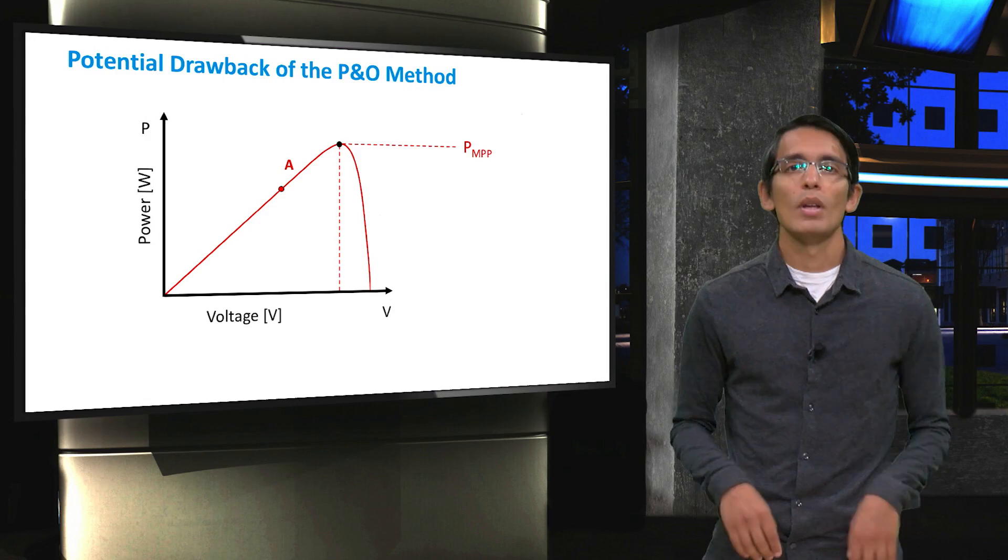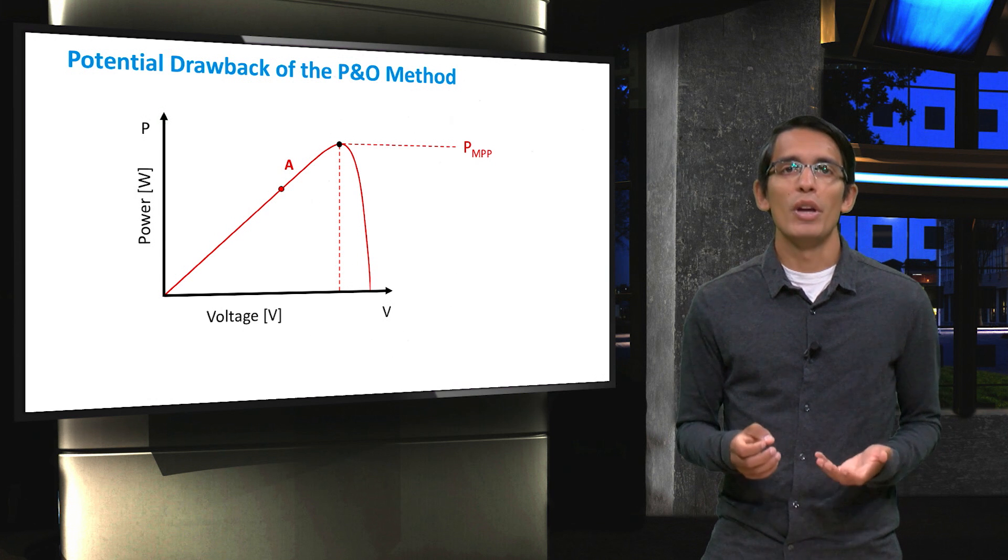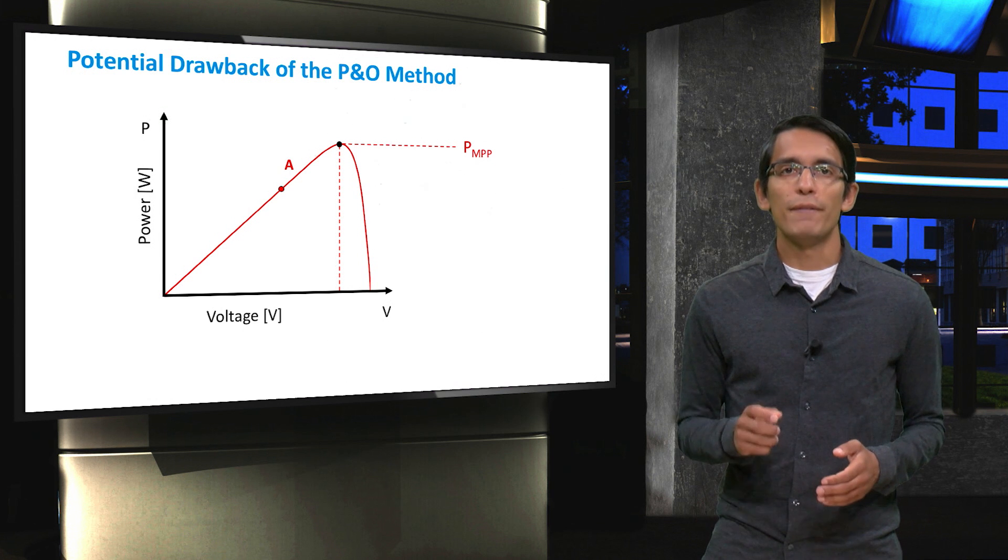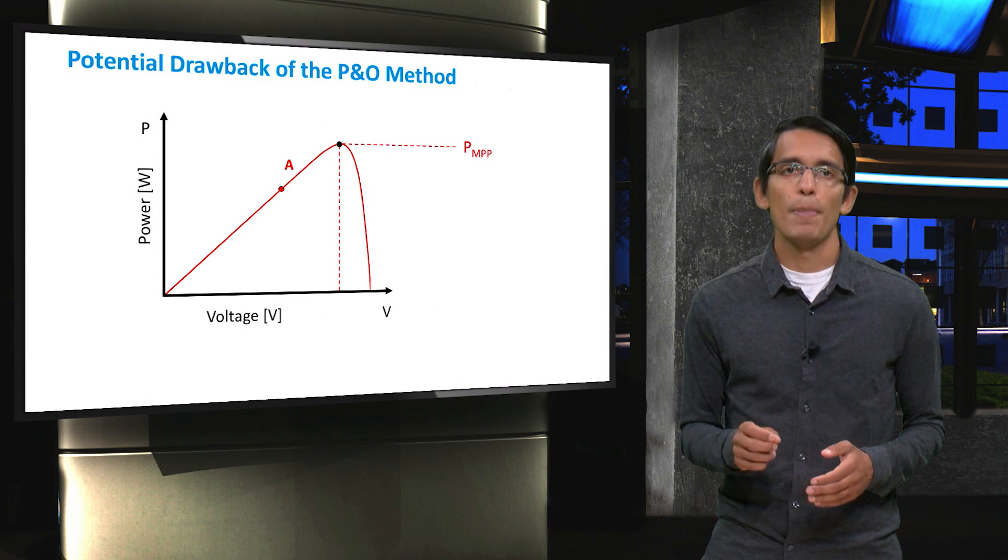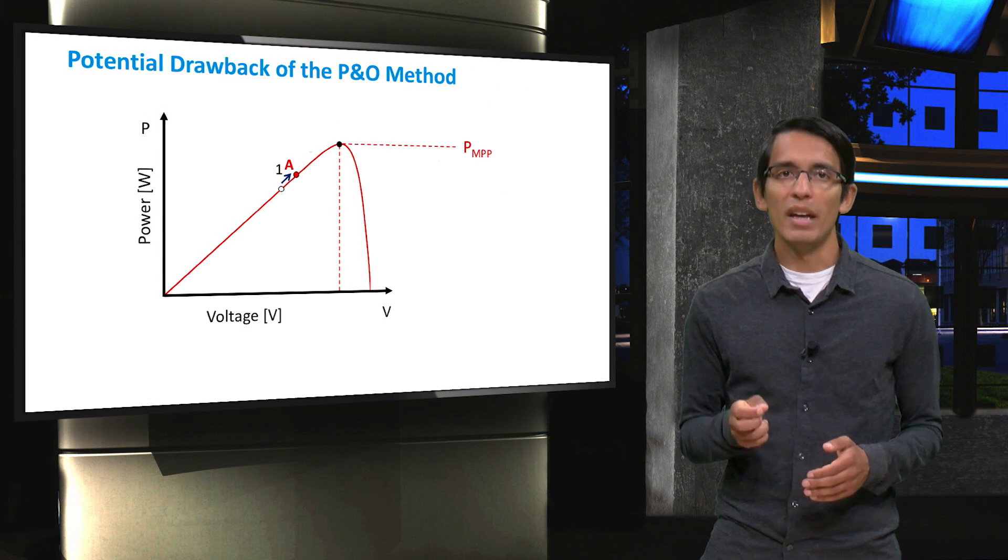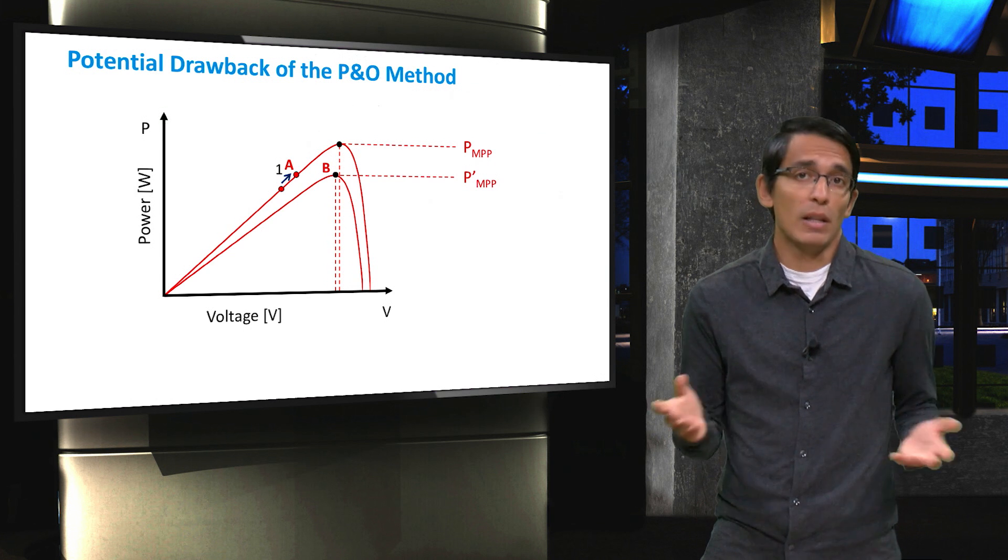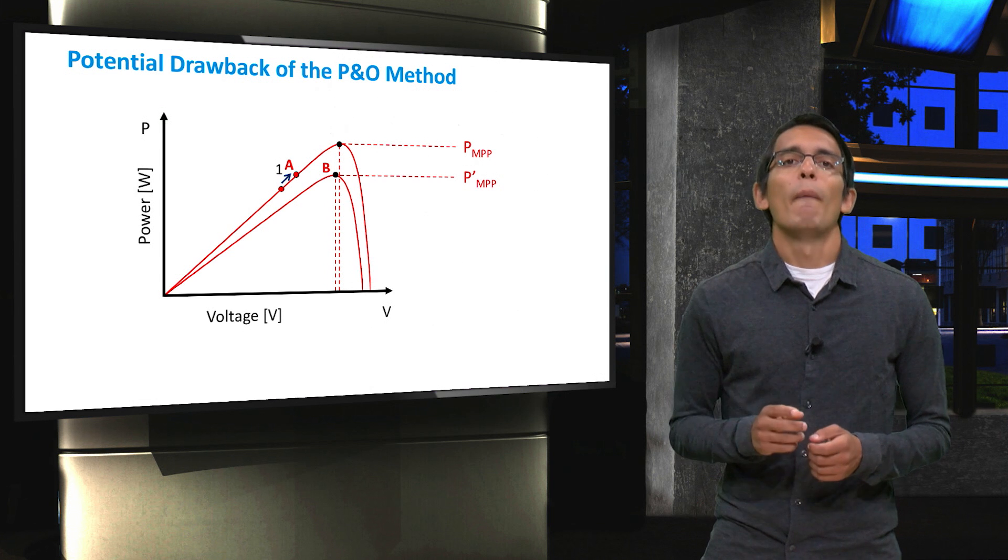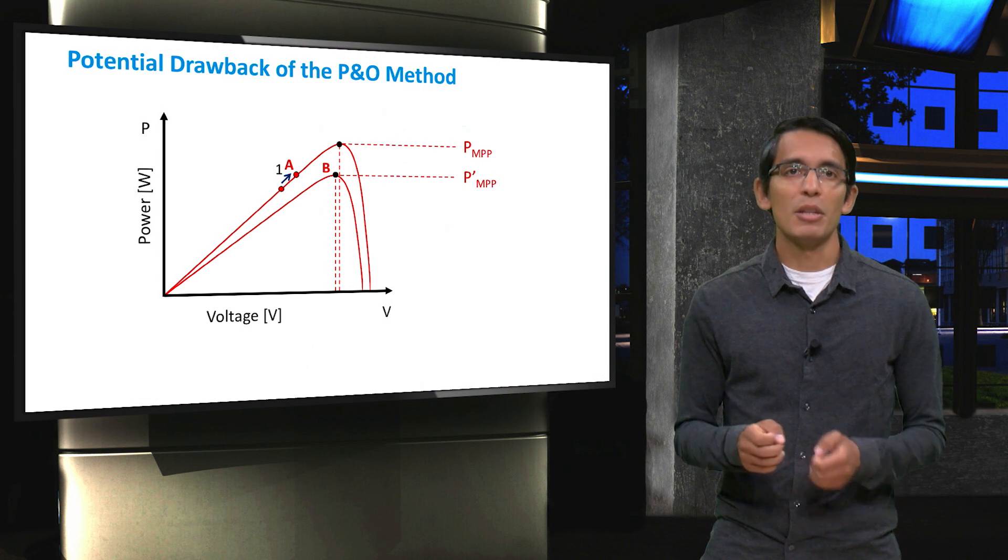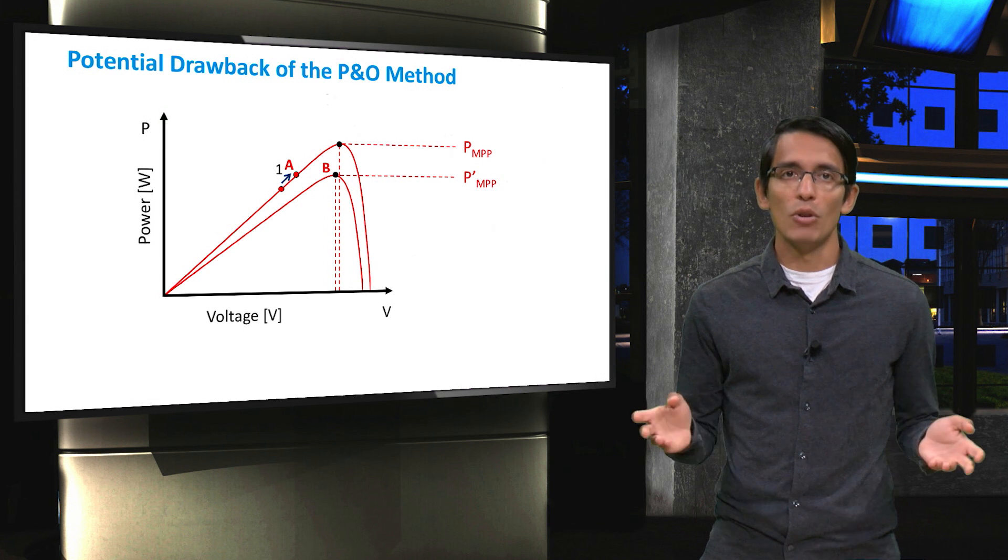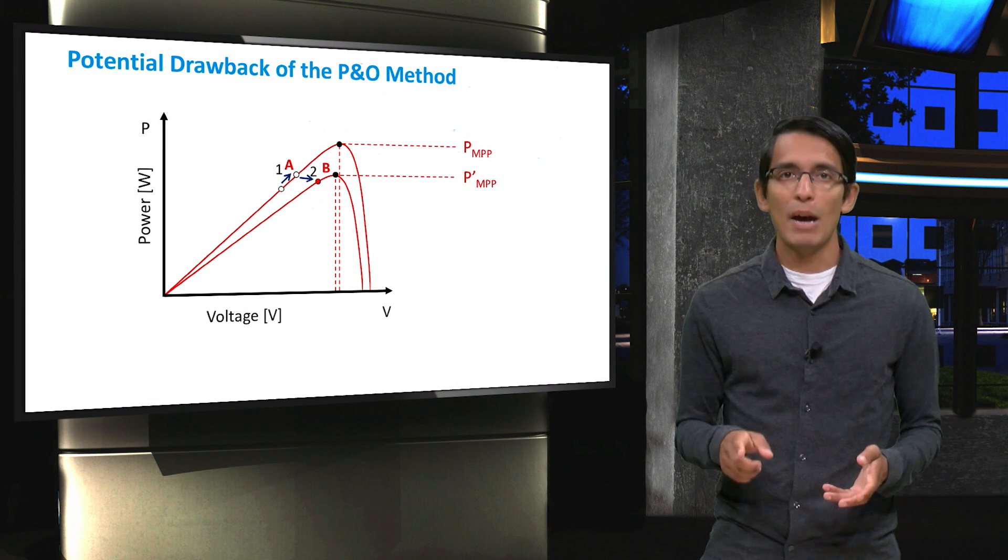Here we see a similar situation to the one we showed earlier in the video. Let's assume that first a positive perturbation is made, increasing the power. Then, before the next perturbation, the irradiance drops due to light cloud cover. Now, the PV curve has changed. However, the system has no knowledge of this, so it would make a positive voltage move, just as normal, and records a drop in power.